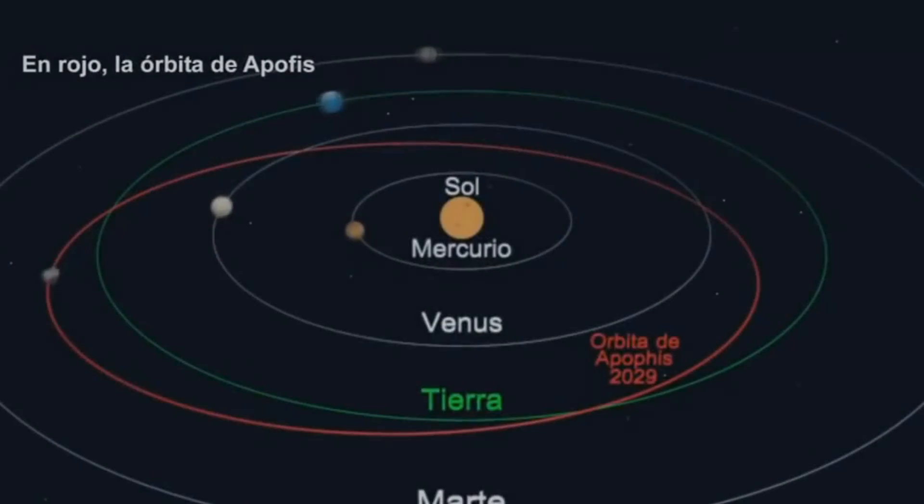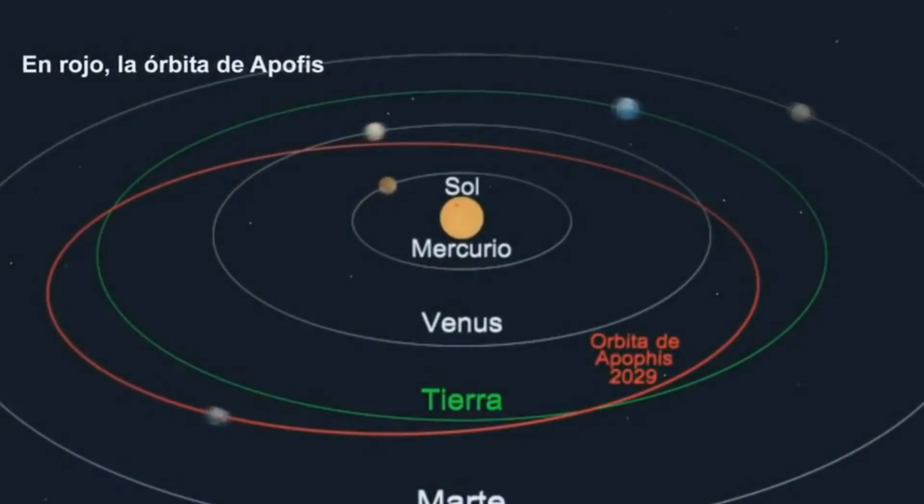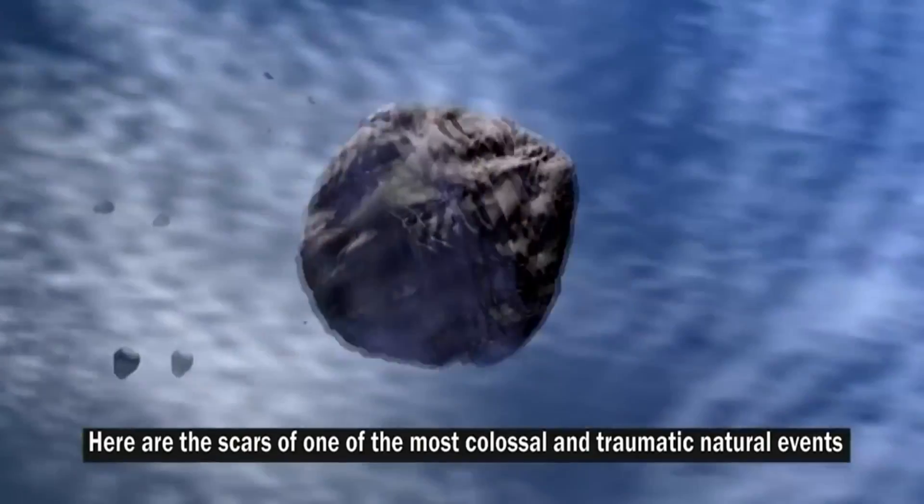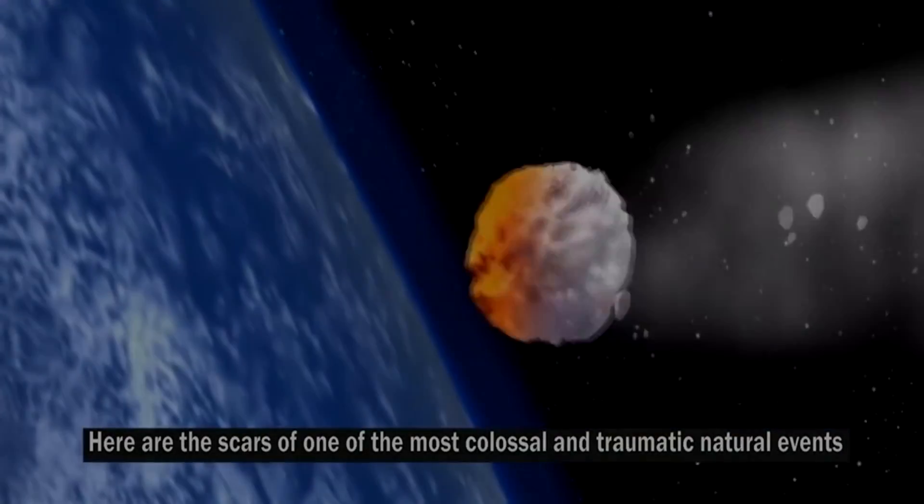But recent data warned that a plan will be devised to remove Apophis from our orbit so that it passes close to the Earth without colliding, thus avoiding one of the greatest disasters in the world.